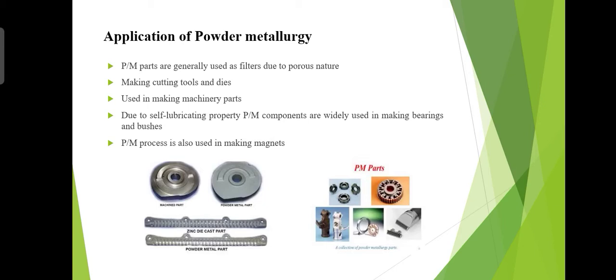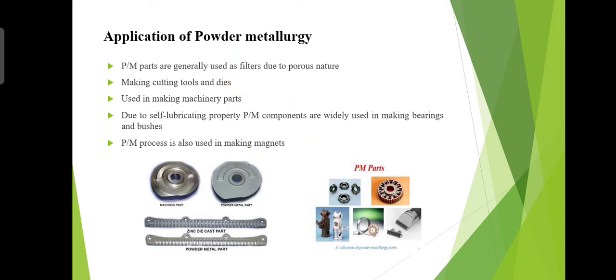Good morning students. In this lecture we will discuss the application of powder metallurgy. Powder metallurgy parts are generally used as filters due to their porous nature, and in making cutting tools and dies, machinery parts, and bearings and bushes due to self-lubricating properties. Powder metallurgy process is also used in making magnets.